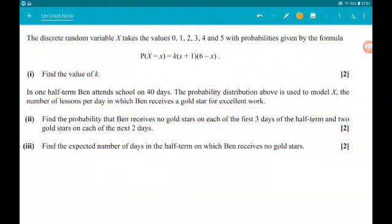Okay, question 11. The discrete random variable x takes the values 0, 1, 2, 3, 4 and 5 with probabilities given by the formula. The probability that x is 2x is k times x times 1 times 6 minus x. Part 1, 2 marks, find value of k.